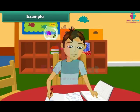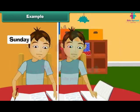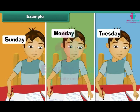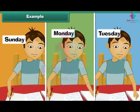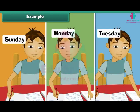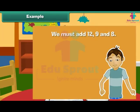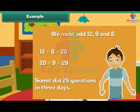Example: Sumit did 12 questions of mental addition on Sunday, 9 on Monday, and 8 on Tuesday. What is the total number of questions done by Sumit in 3 days? We add 12, 9, and 8. First, 12 plus 8 equals 20. Then 20 plus 9 equals 29. Sumit did 29 questions in 3 days.